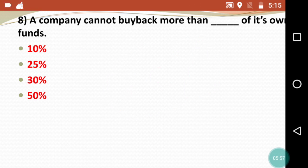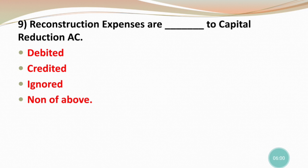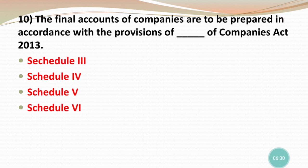Next question: Reconstruction expenses are dash to capital reduction account. Options are debited, credited, ignored, or none of the above. The correct answer is debited — reconstruction expenses will be debited to the capital reduction account. The journal entry is: Capital Reduction Account Dr., Bank Account Cr.